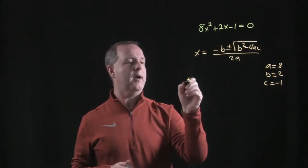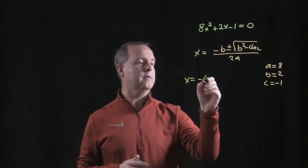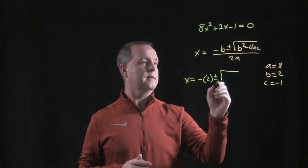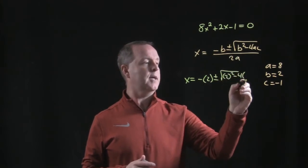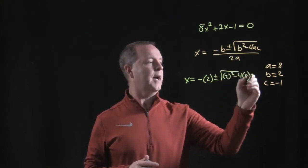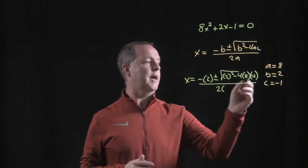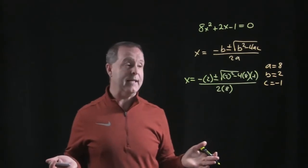So how do we use this? All right. x equals negative b, which is a 2, plus or minus b squared, which is a 2, minus 4 times a times negative 1, all over a 2 times my a, which is an 8. There I plugged everything in.